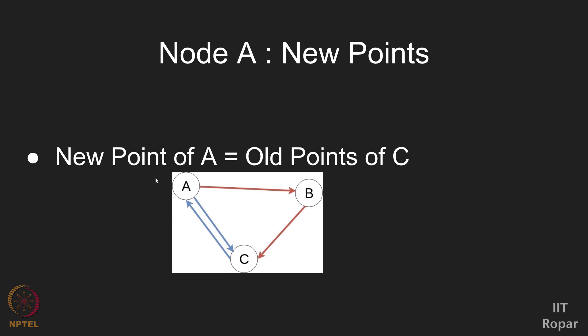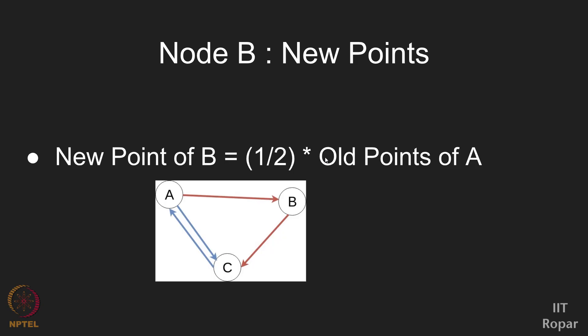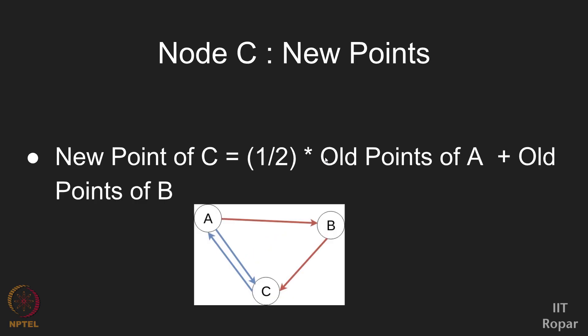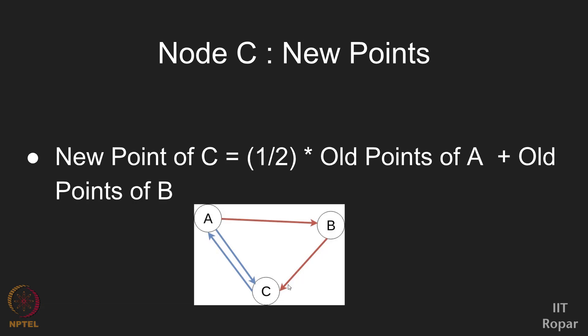Node A will get everything from node C, so C's old points come entirely to A as new points. Node B will get half from A, because A likes both B and C and must share equally — so B gets 50 out of 100. Node C gets half from A as well as everything from B entirely. After one exchange, B settles with 50 points.